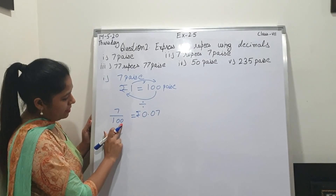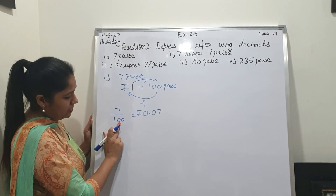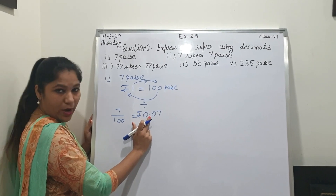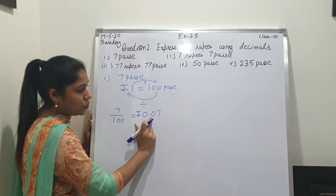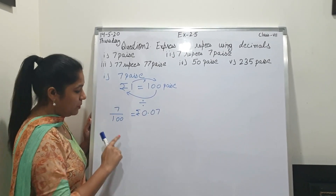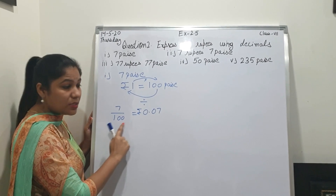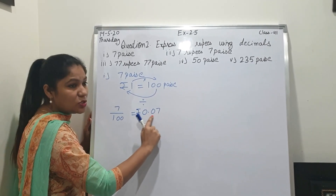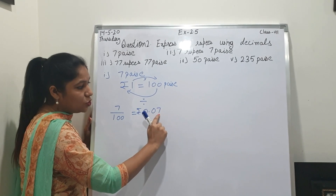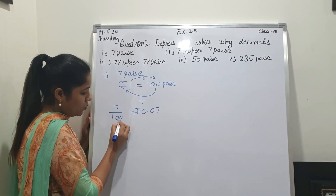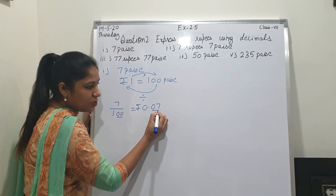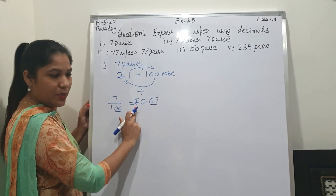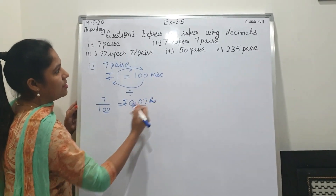Now see, student, we have to write in decimal. Here are two zeros, so what we will do — we will write 0.07, and that is in rupee. How I did: see here two zeros — it means decimal places after the point. Here should be two decimal places because here are two zeros. So after point, two decimal places. Two zeros, two decimal places. In rupee. So that is your first answer.